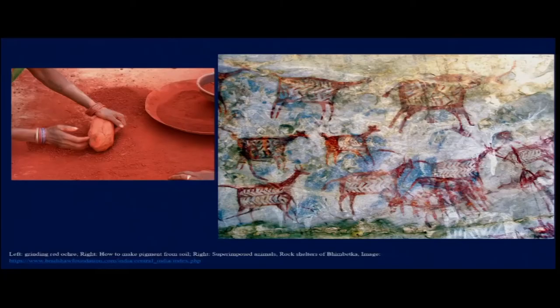In later times, lamp black is another material that was used — collected from the soot of lamps — and it has a tremendous amount of carbon residue, which explains how it produces the black color. Apart from black and red, which are the prime colors used in these images, white also appears as another source. For example, calcium carbonate found in nature, or gypsum, or materials with zinc content, can also be utilized for making white pigment.